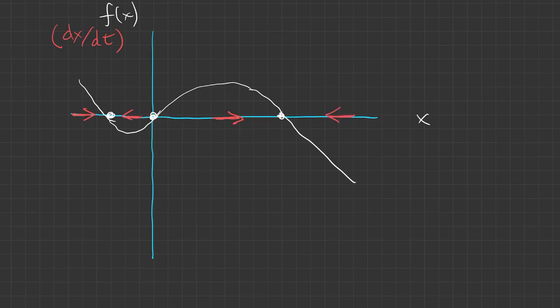And now the motions along the axis make it pretty clear that the fixed point at negative one and the fixed point at three are stable. Solutions get pushed into them. Whereas at the origin, solutions get pushed away, so that's unstable.